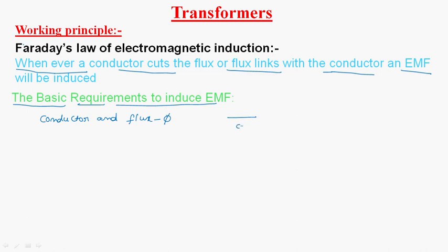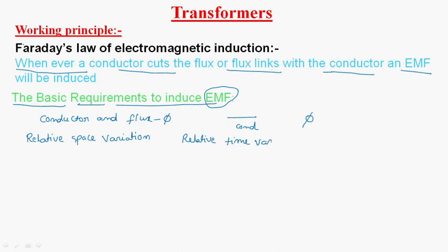Let us say this is the conductor and this one is the flux. Simply by keeping the conductor aside and flux aside, we cannot induce the EMF. Our main aim is to induce the EMF, so there must be a relative space variation or relative time variation. These two are the techniques which we will use to induce the EMF.